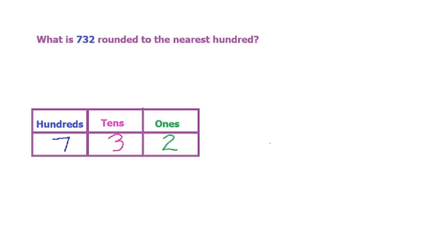This is the number we're working with, 732. What you have to remember when rounding, we're going to be rounding to the nearest hundred, so we have to focus on this number.